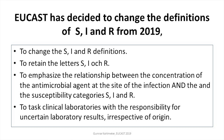The decision was to change the definitions of susceptible, intermediate, and resistant to something different. The decision was also to retain the letters S, I, and R. That was following a long discussion about whether to change the letter I to another letter, and also to emphasise the strict relationship between breakpoints, between susceptibility testing categories and the concentration — or exposure, if you like — at the site of the infection.